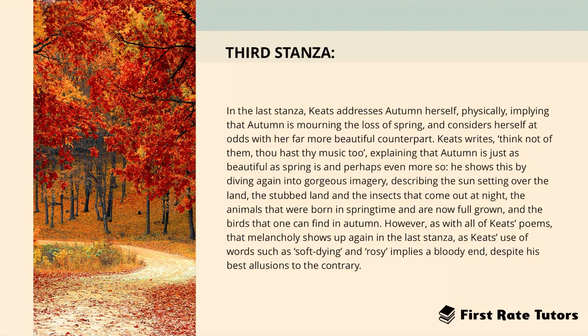He explains that autumn is just as beautiful as spring, and perhaps even more so, showing this by diving into gorgeous imagery describing the sun setting over the stubbled land, the insects that come out at night, the animals born in springtime now full grown, and the birds found in autumn. However, as with all of Keats's poems, that melancholy shows up again, as words such as 'soft-dying' and 'rosy' imply a bloody end despite his best allusions to the contrary.